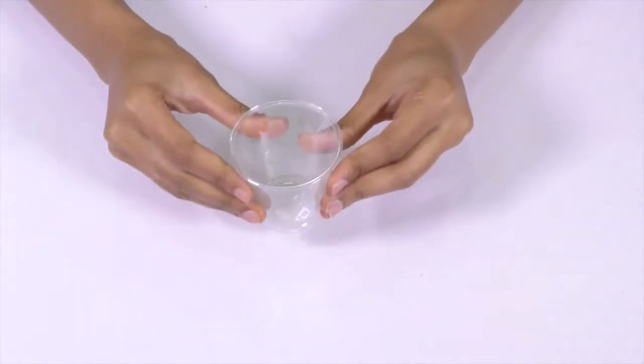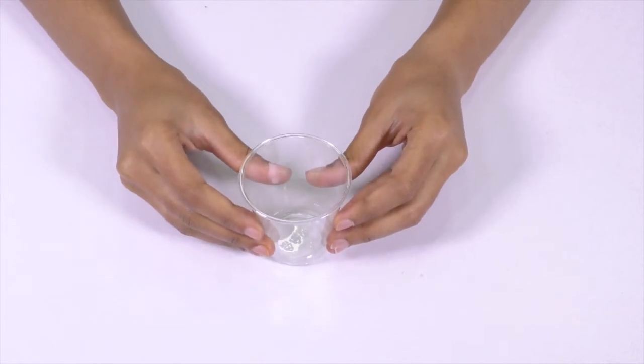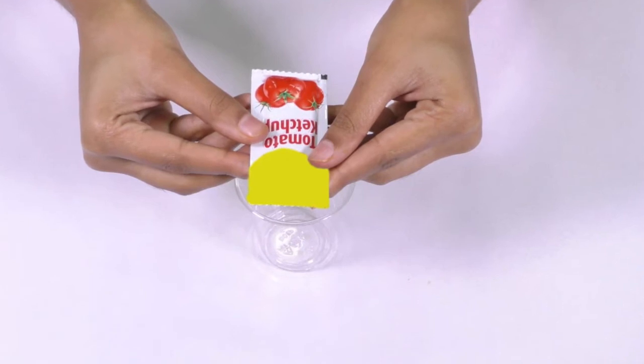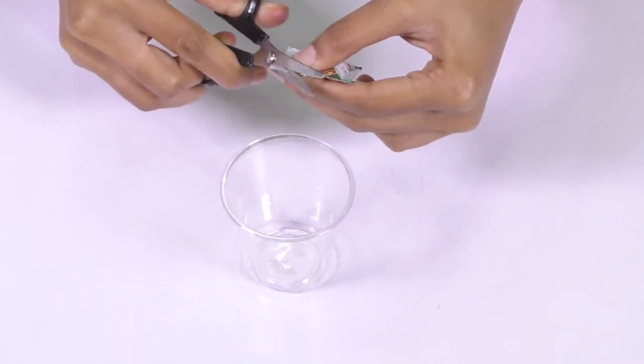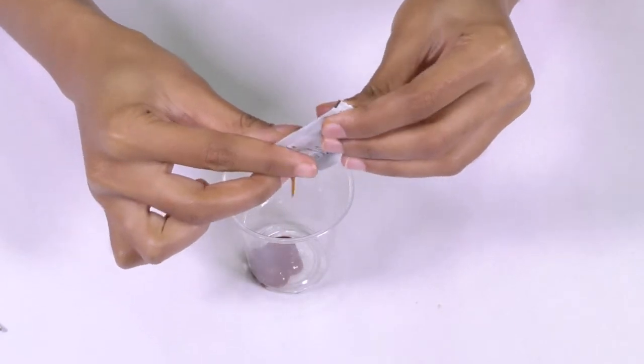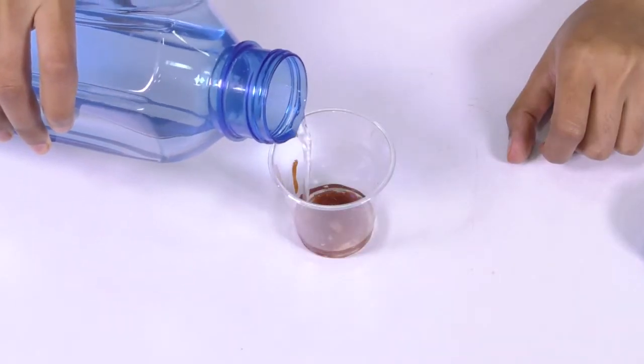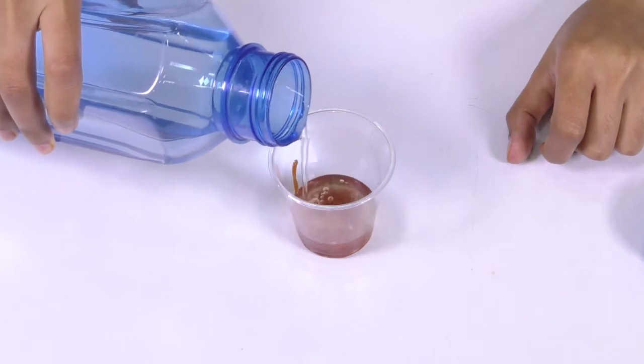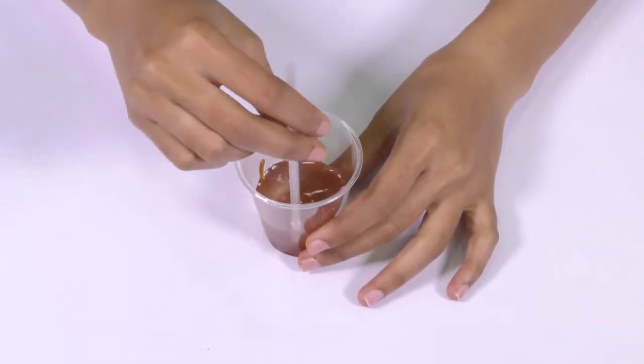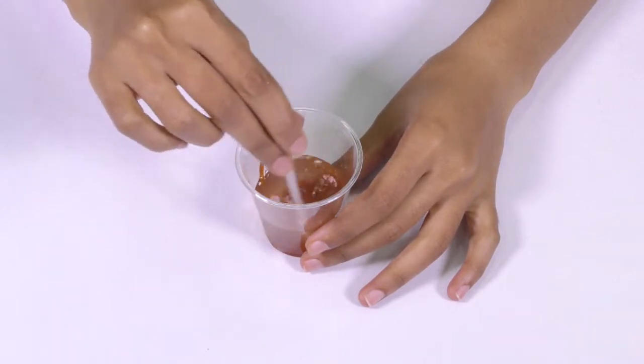Take an empty clear cup and place it on a table. Next, take the ketchup sachet and open it using scissors and pour the ketchup in the cup. Fill a little less than half of it with water. Mix the ketchup with water using a stirrer. Keep the cup aside.